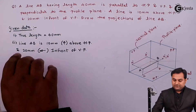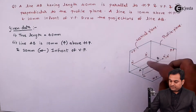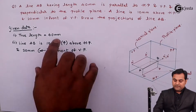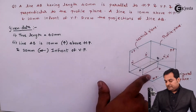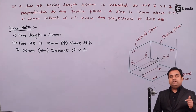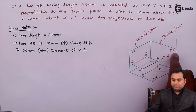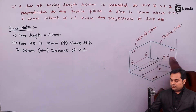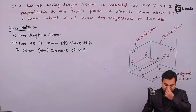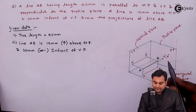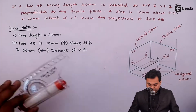The line AB has a length of 40 mm, is parallel to both HP and VP, and perpendicular to the profile plane, which is the third plane. When a line is parallel to both planes and perpendicular to the profile plane, the line appears as a point in the side view. Points A and B coincide, giving notation A-dash B-dash. The front view is in VP, top view is in HP, with distances 10 mm above HP and 20 mm in front of VP.